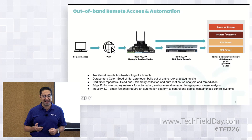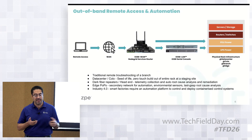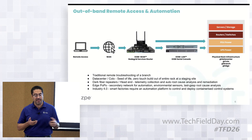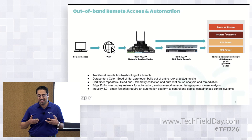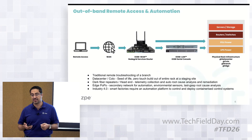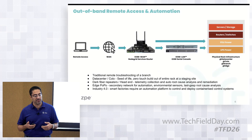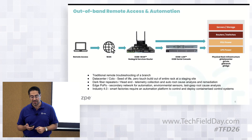What's on screen is the traditional way of setting up out-of-band: physical infrastructure, serial consoles, and routers connected using all different interfaces, accessible remotely. The first use case is traditional remote troubleshooting of a branch. But in a data center colo, our technology is also used to automate an entire rack build-out — customers ship entire racks on a pallet, our box goes at the top and can rebuild the entire rack at a staging site or on-prem at a customer location.